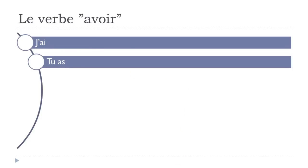The second form is tu as. As usual in French, the final -s is not pronounced. So it's tu as. Together: j'ai, tu as.